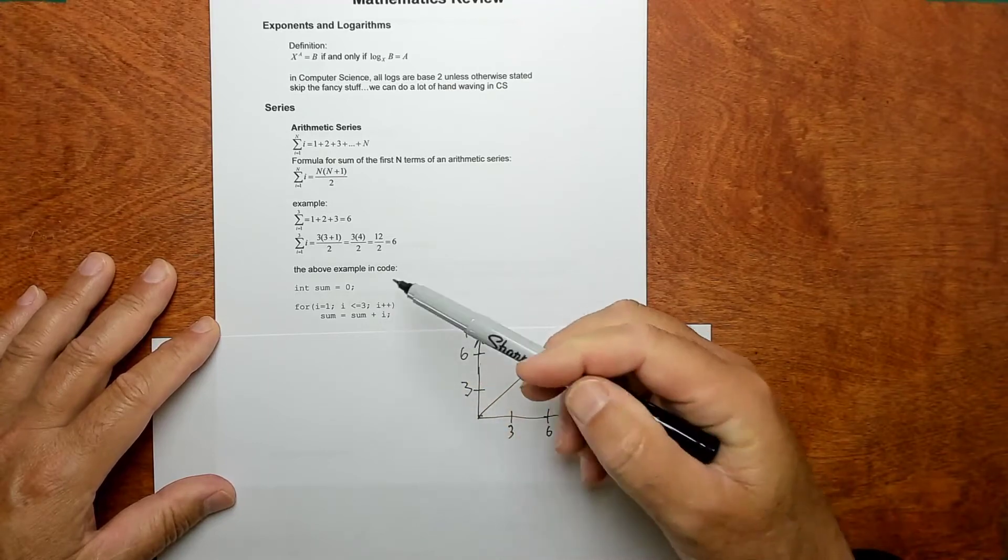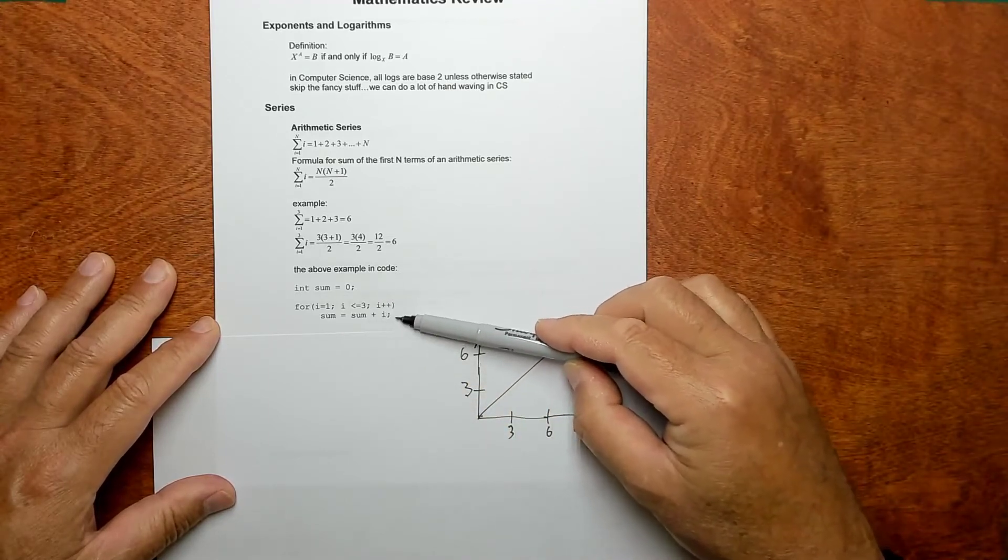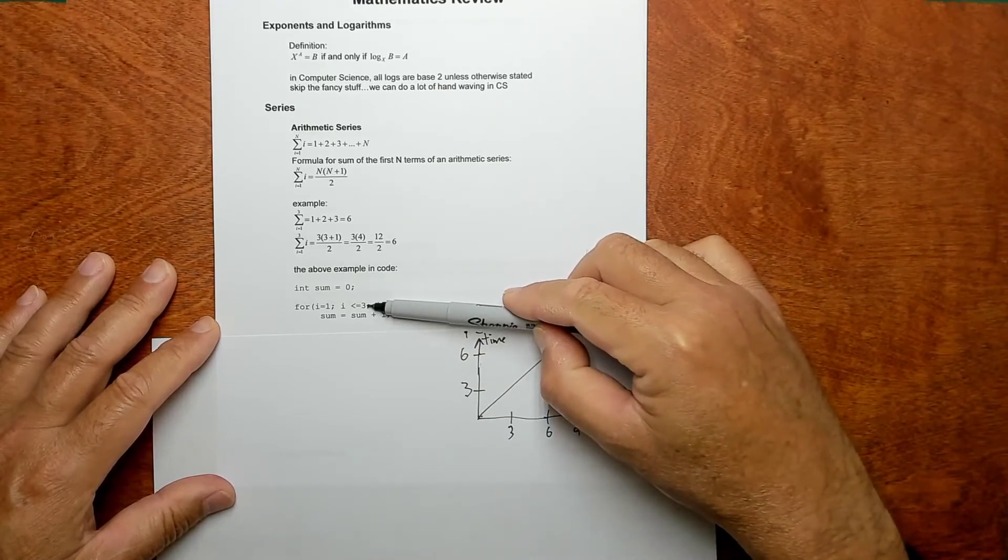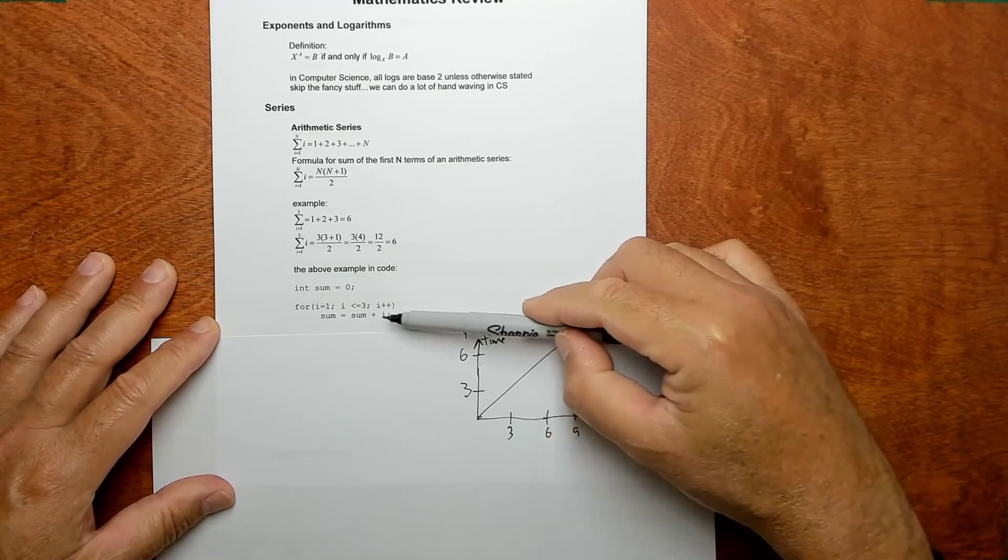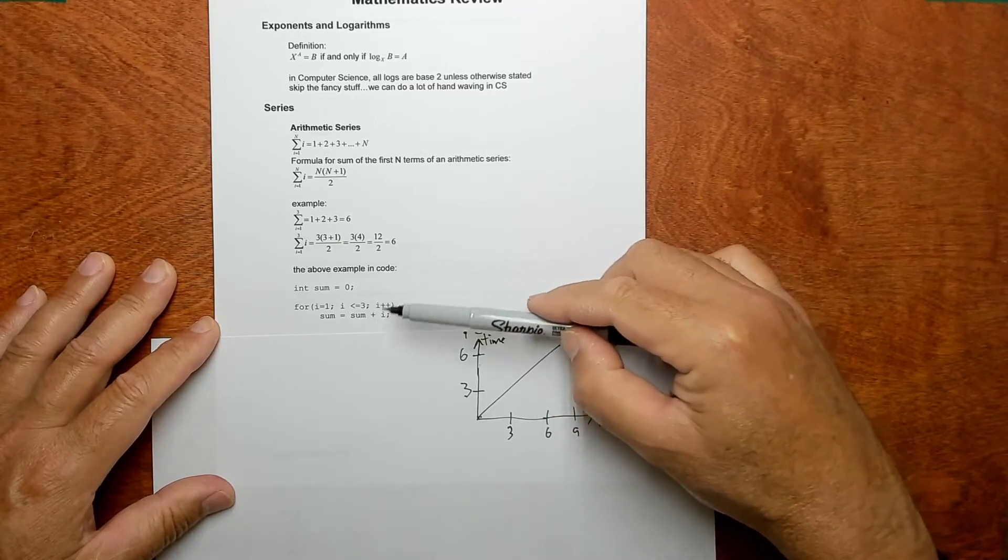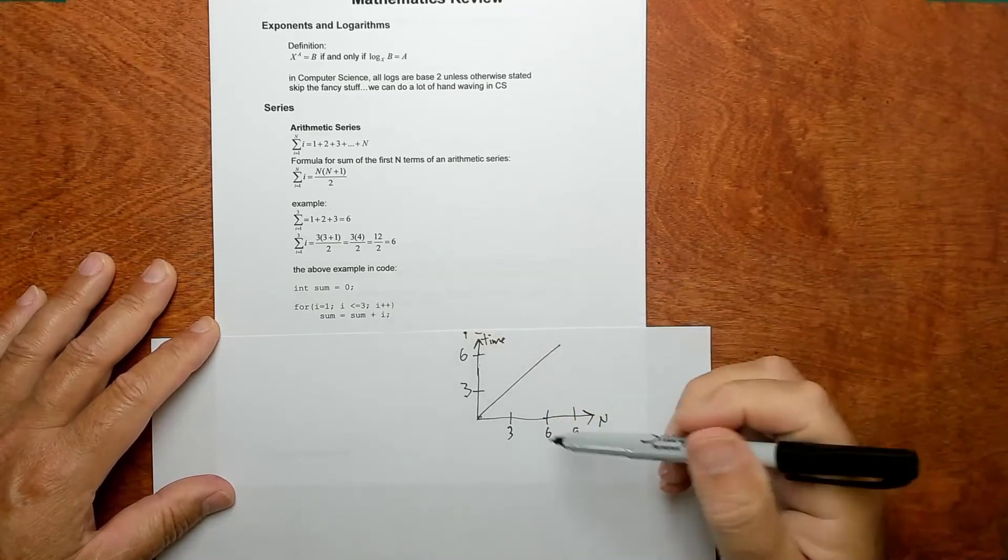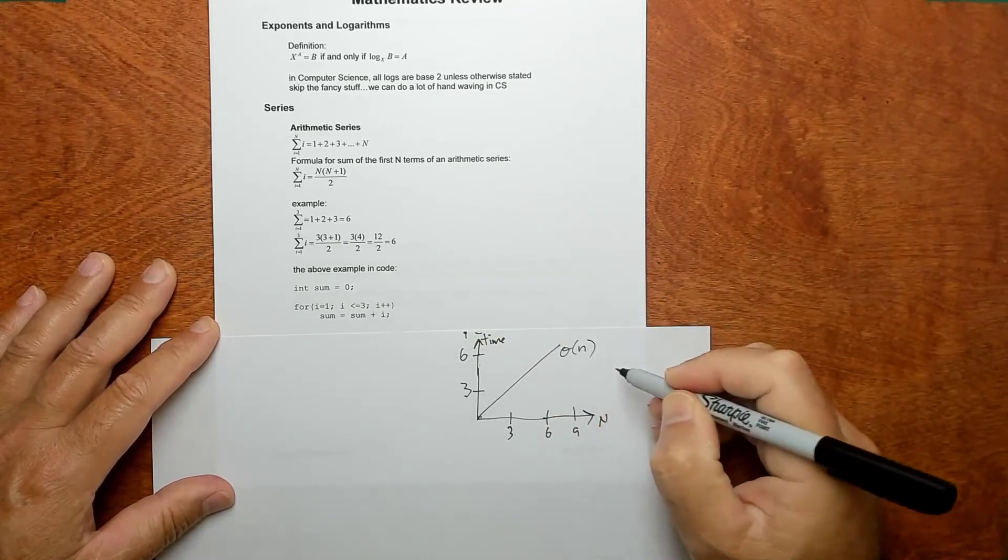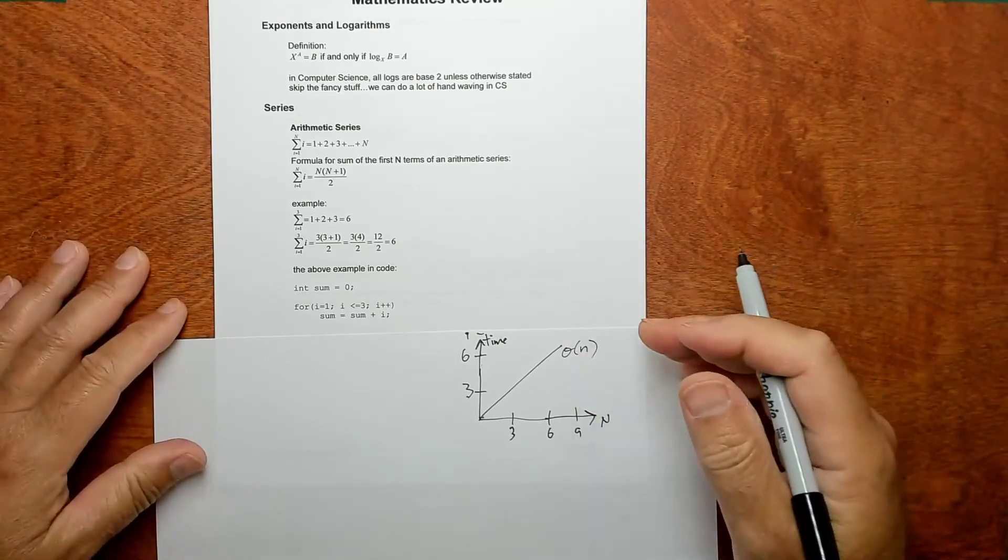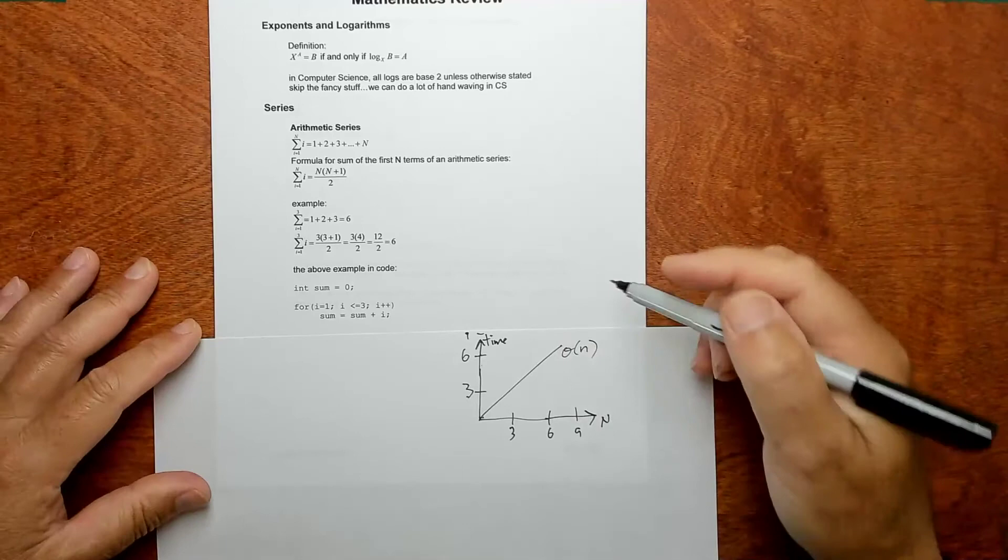Because the counter, this stuff on the inside is just executing. In this case, it's executing 3 times. If you made n 6, it would execute 6 times. If you made n 9, it would execute 9 times. So this has what we call big O of n time complexity. It's not great, but okay. It's not terrible.